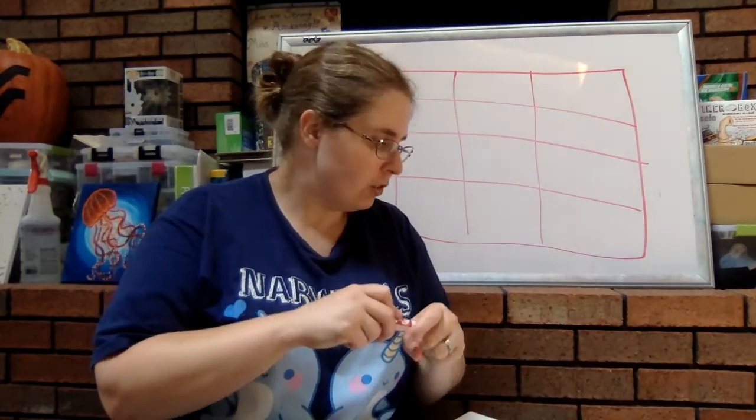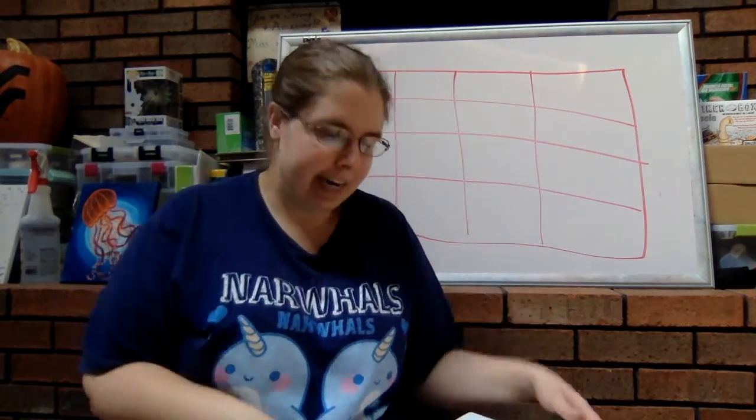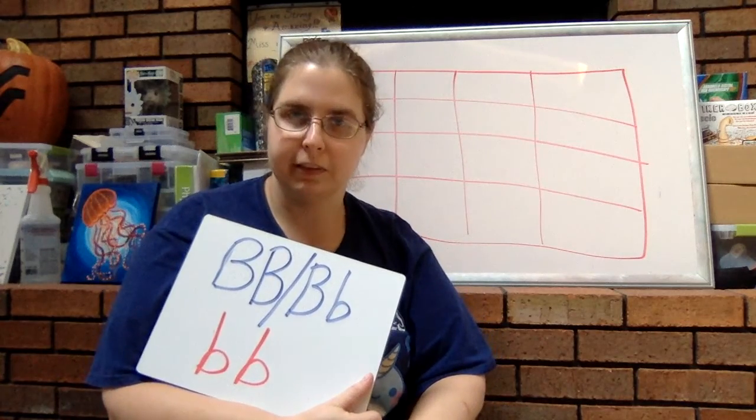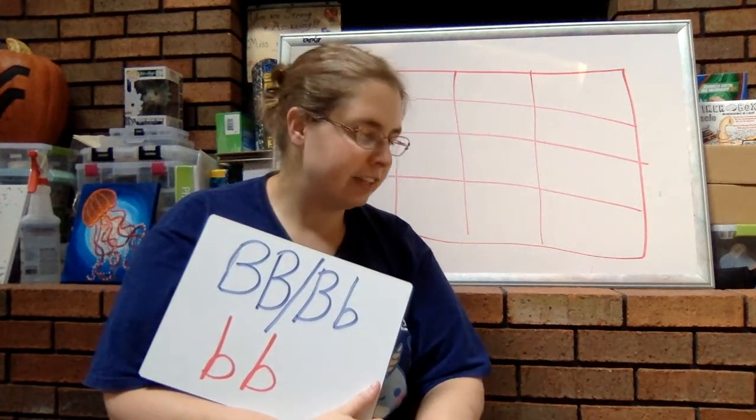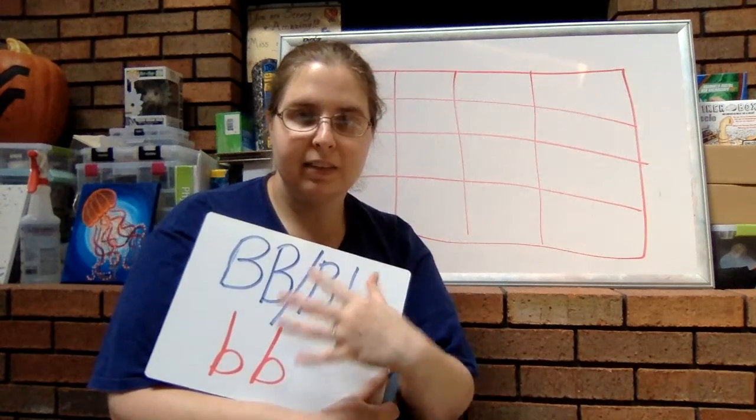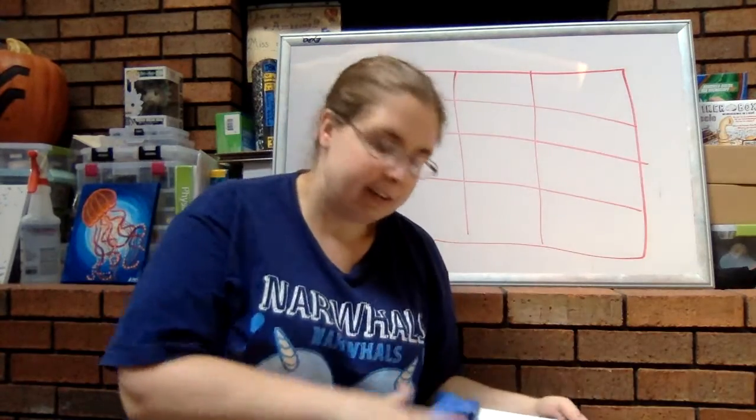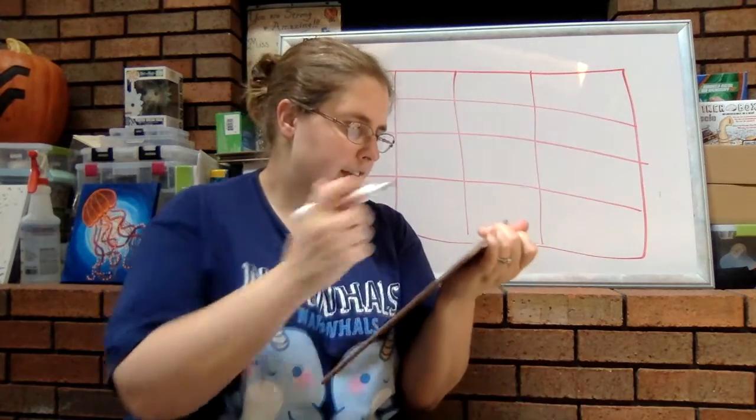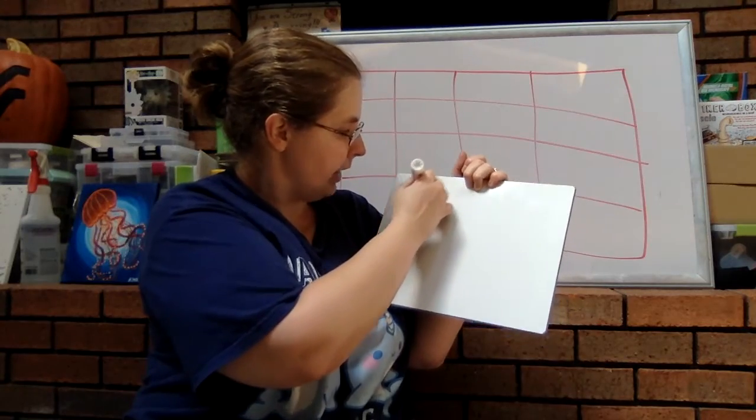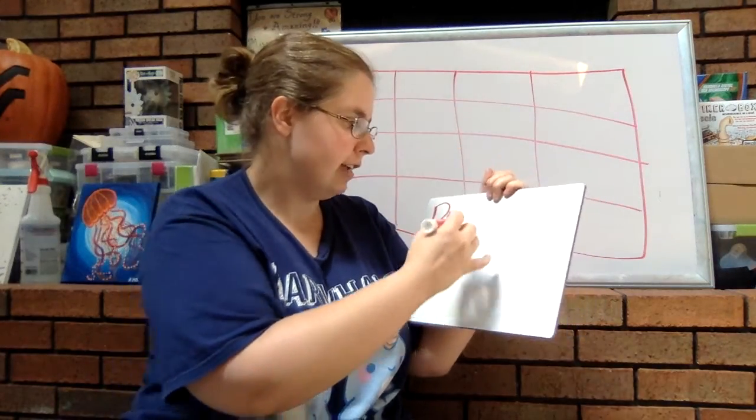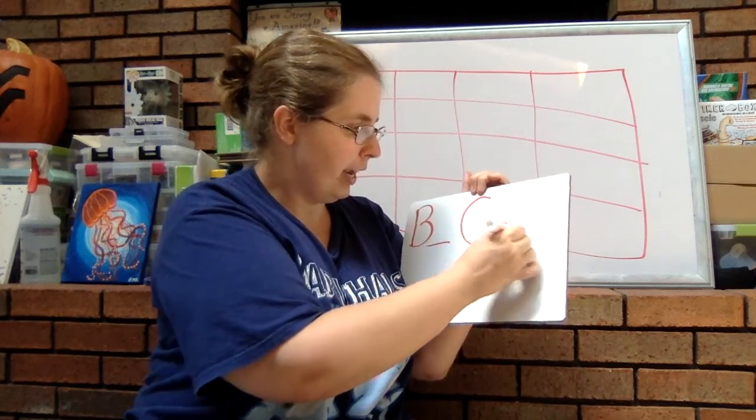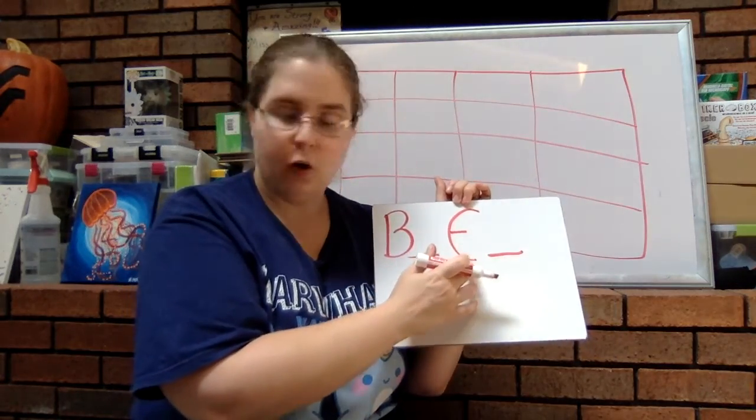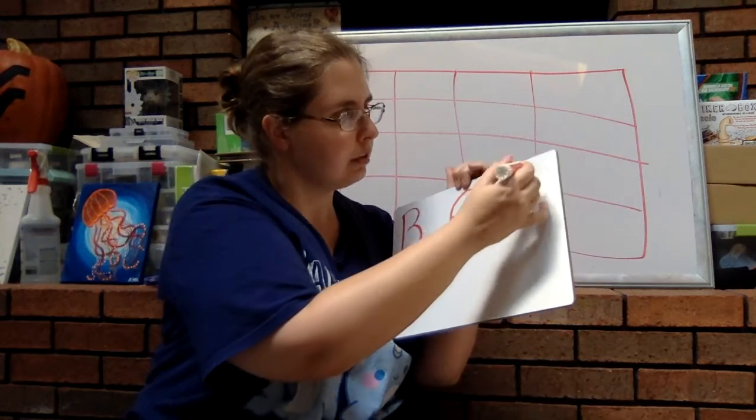However, this is assuming that the second gene, which deals with actually taking the pigments that are produced and putting them into the skin so that they can be expressed in the fur. However, assuming that that second gene is dominant, you will be able to make the pigments and deposit them, which means you will see that fur color.